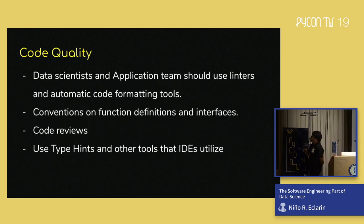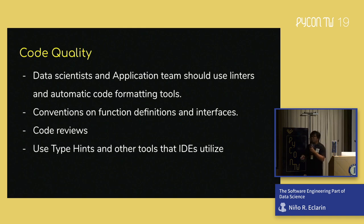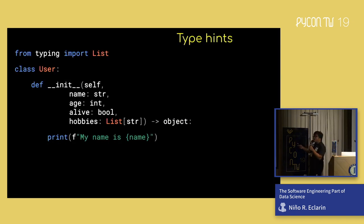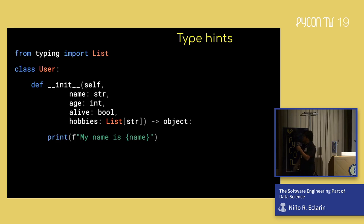For code quality: data and application teams must use linters every time. You need to define conventions and functions for interfaces. Please do regular code reviews — no matter who it is, just jump in and review their code. It's very important so you learn what the other person is doing. Use type hints and other tools that your IDE utilizes. Anyone familiar with type hinting? Have you seen this code and this import before? Please use it — adapt it — it's going to be the future of Python.